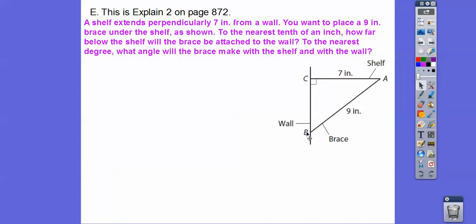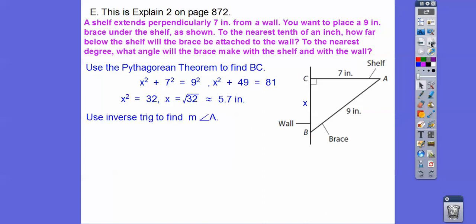And then to the nearest degree, what angle will the brace make with the wall right here? So the brace is going to make the wall right here. So that's what we're looking for right there. So let's go ahead and use the Pythagorean theorem to find that third side right there. So x squared plus seven squared equals nine squared. So when we subtract 49, we get 32. Square root of 32 is about 5.7.